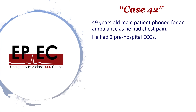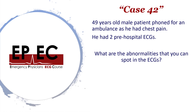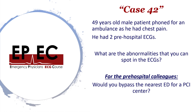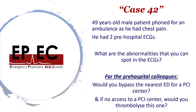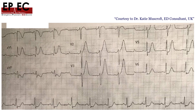The case she sent was about a 42-year-old male patient who phoned for an ambulance with bad chest pain. He had two pre-hospital ECGs that we will see in a few seconds. The first question asked was: what abnormalities can you spot in the ECGs? And for our pre-hospital colleagues — would you bypass the nearest ED for a PCI center, and if there is no access to a PCI center, would you thrombolyze this patient?